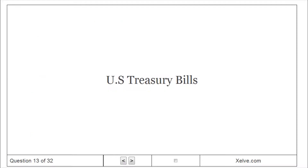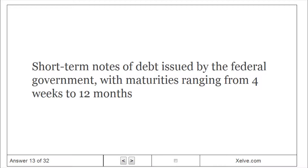U.S. Treasury bills. Short-term notes of debt issued by the federal government with maturities ranging from 4 weeks to 12 months.